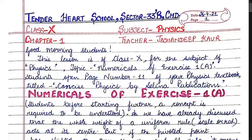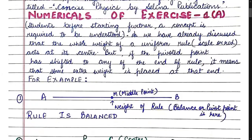Good morning students. This lesson is for class 10th, subject of physics. The topic is numericals of exercise 1A. Today, children, you may all open page number 11 of your physics textbook titled Concise Physics by Selina Publications. Before starting the numericals, I want you all to learn a major concept which will be required in all the numericals of this exercise.